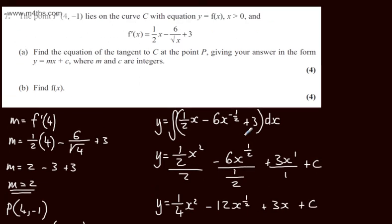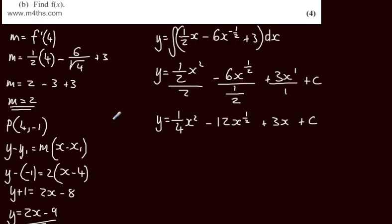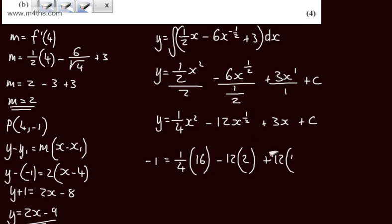We need to find the value of c. We can take that at the point P, so simply subbing these values in. Then we can say that minus 1 will be equal to 1 quarter of the x-coordinate of P, 1 quarter of 4 squared will give me 1 quarter of 16, minus 12 lots of now 4, and that's going to be the square root of 4, which is going to give me 2, plus 3 lots of 4, which is going to give me 12, so let's just tidy that up a little, plus now the 3 lots of 4 plus c.